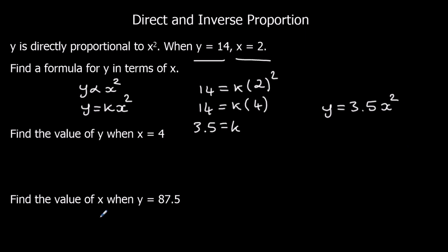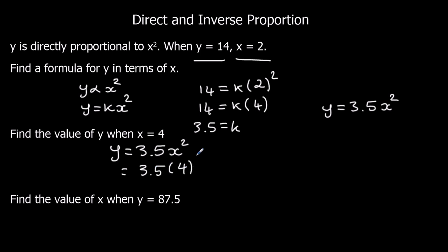Find the value of y when x is 4. We've got our formula: y equals 3.5x squared. We substitute in x equals 4: 3.5 times 4 squared, which is 3.5 times 16. 3.5 times 16 is 56. So y equals 56.